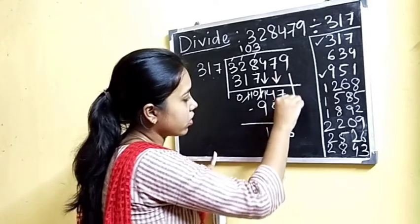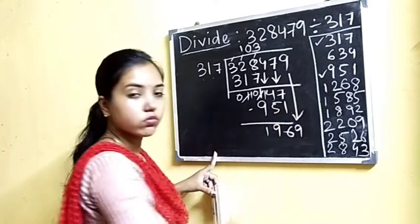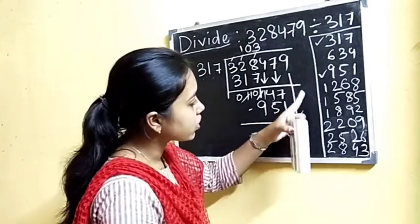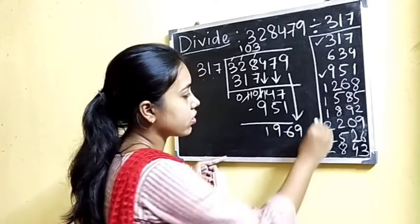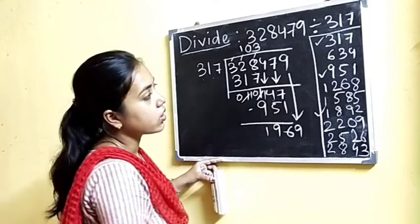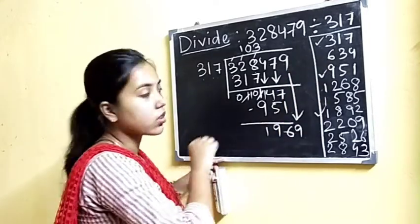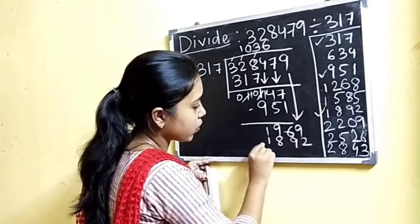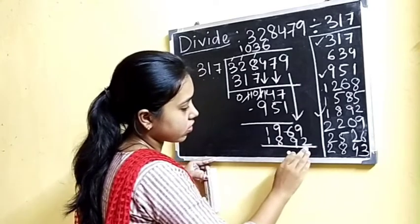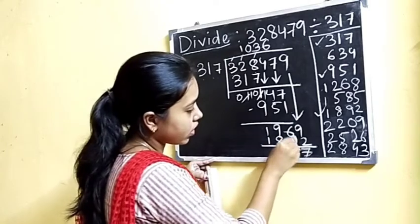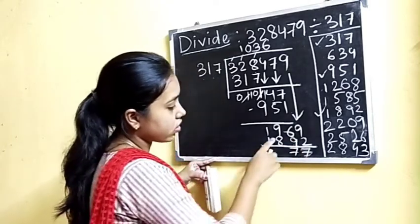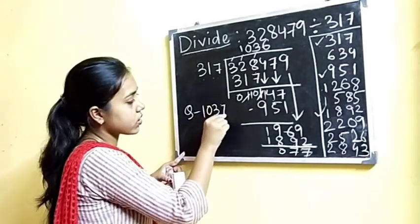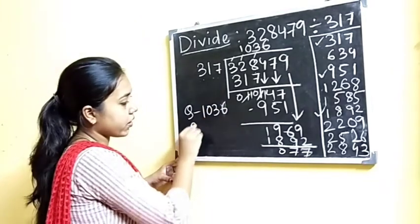Now we will bring down 7 to make it 1147. We look for which number comes in the table of 317 — nine hundred fifty-one. So we take the third multiple: quotient is 3. We write 951 and subtract to get a remainder of 196. Now we bring down 9 to make it 1969. This does not come exactly in the table of 317, so we search — the sixth multiple comes closest. So the quotient digit is 6, we write 1902 and subtract to get remainder 77. So our quotient is 1036 and the remainder is 77.